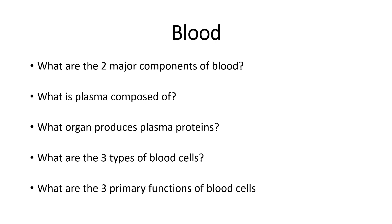What are the two major components of blood? Blood cells and plasma. For an average 170-180 pound person, there's about six quarts of blood, or roughly five and a half liters. About 55% of that is plasma, and about 45% is blood cells — meaning red blood cells, white blood cells, and platelets, those three types of blood cells.